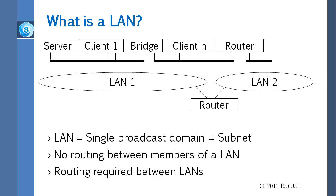This whole thing is one LAN, and when the router comes in, the LAN ends. So there are two LANs here because there is a router — this is one LAN and there is something on the other side. We will not use the word extended LAN anymore. For simplicity we will just call them LAN. A single broadcast domain is one subnet, or a subnet is a LAN. So there is no routing between the members of a LAN.